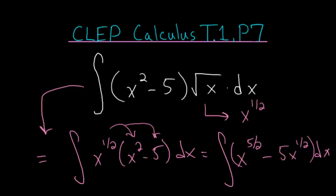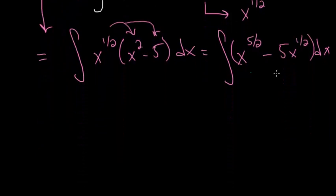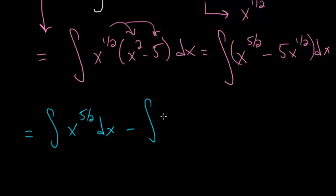Since we have an integral of a difference, we can rewrite this as the difference of two integrals. It would be the integral of x to the five-halves dx minus the integral of five x to the one-half. I'll put the five in front because it's constant.